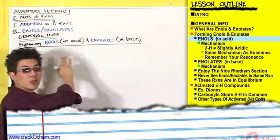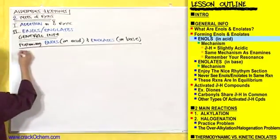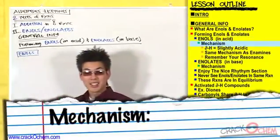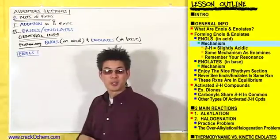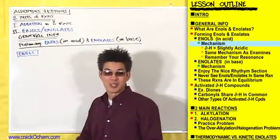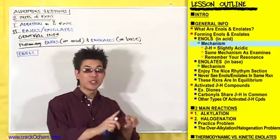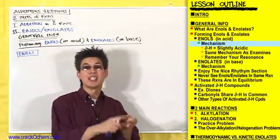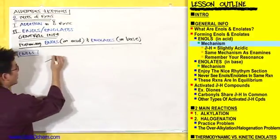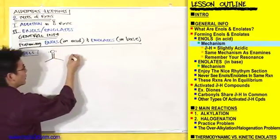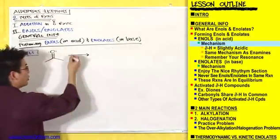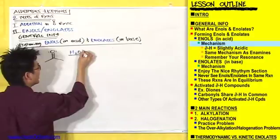Let's start with how you form enols first. Enols are the protonated form, so you're going to make them in acidic conditions. What you're going to do is take an aldehyde or a ketone and turn it into an enol under acid conditions — aldehydes work exactly the same way. Take this ketone and react it in acid since we're making an enol. What better than the quintessential acid: H3O plus.